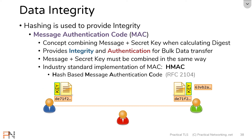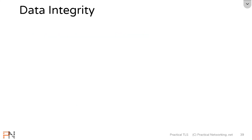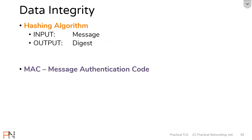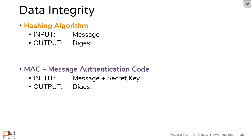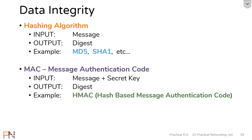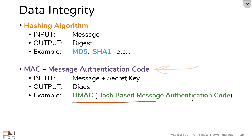And that is how SSL and TLS provide data integrity. To recap these last few lessons: a hashing algorithm takes as input a message and produces as output a message digest. Whereas a MAC, or message authentication code, takes as input a message plus a secret key and produces a digest. Specific implementations of hashing algorithms are MD5 and SHA-1. A specific implementation of a message authentication code is the HMAC, or the hash-based message authentication code. The key takeaway is understanding the definitions of a hashing algorithm, a message authentication code, and an HMAC.